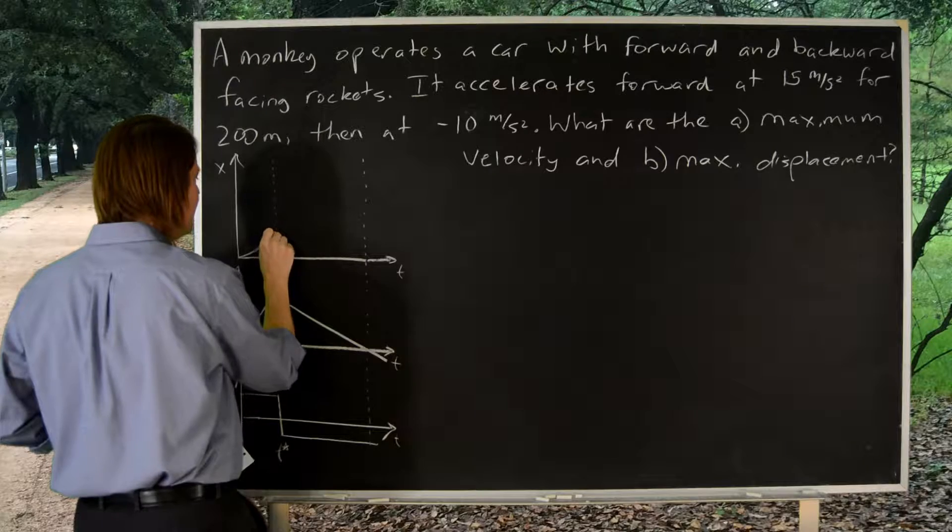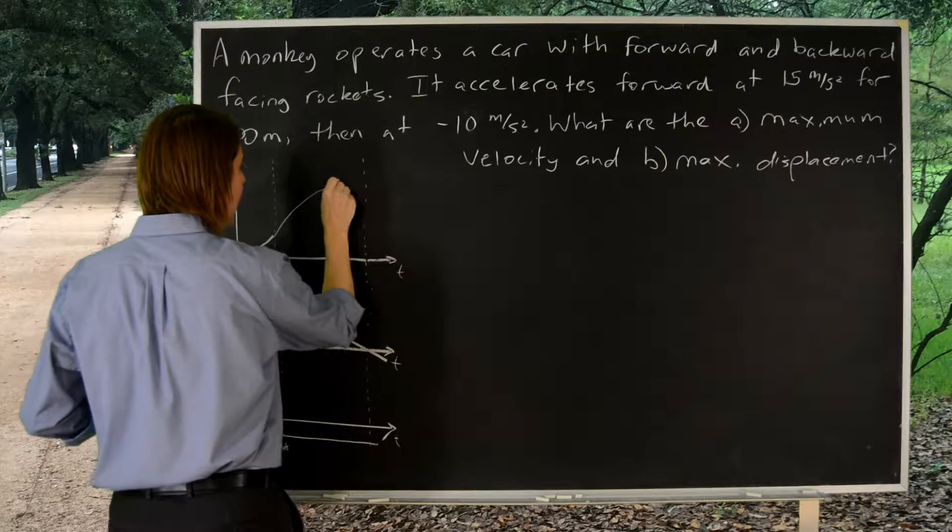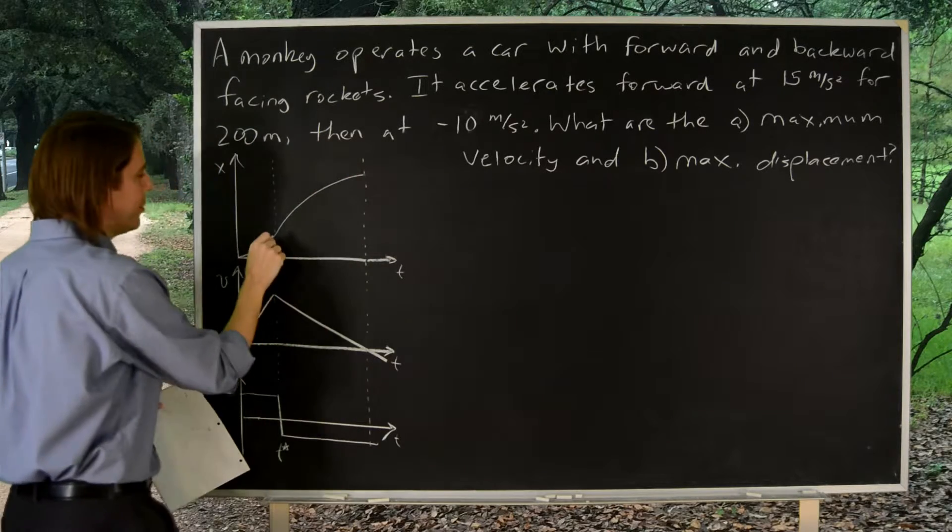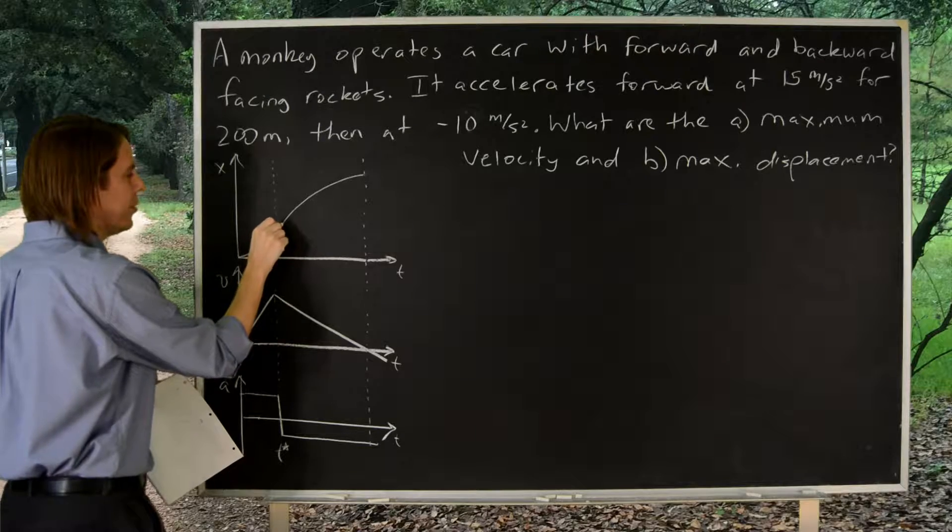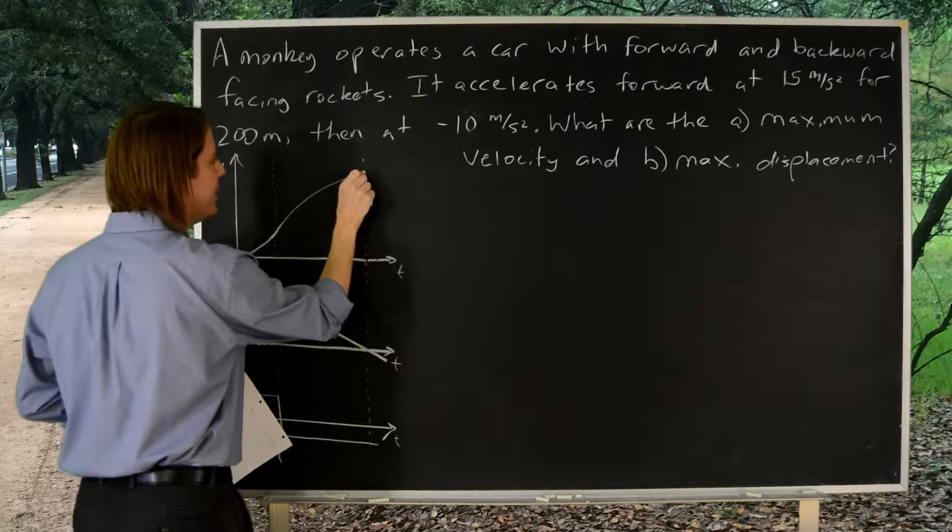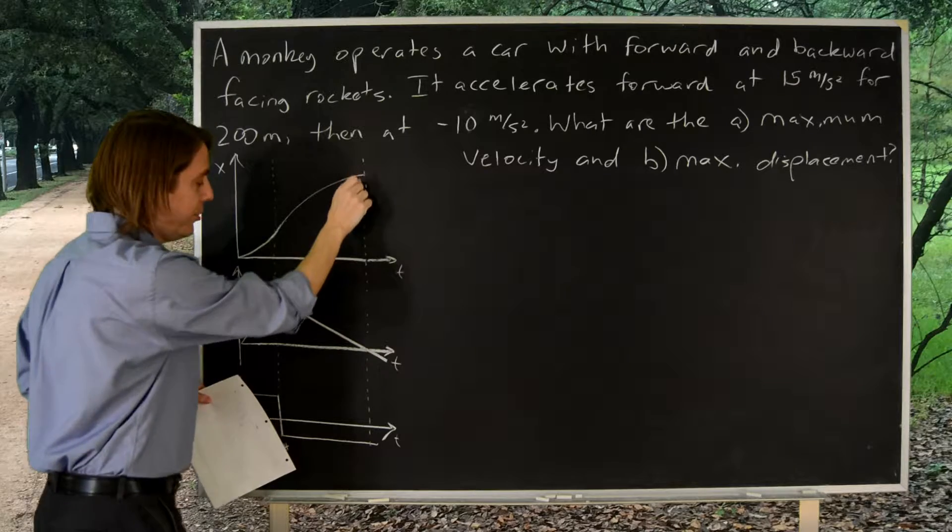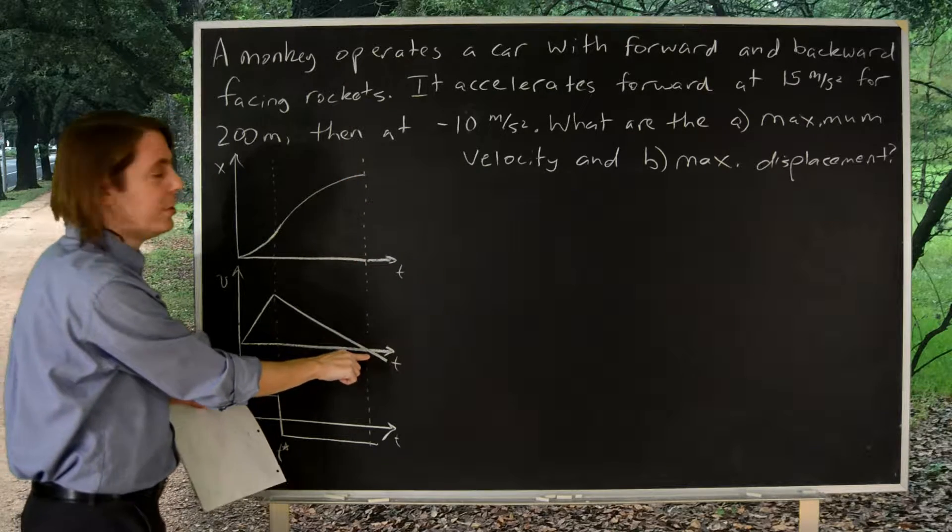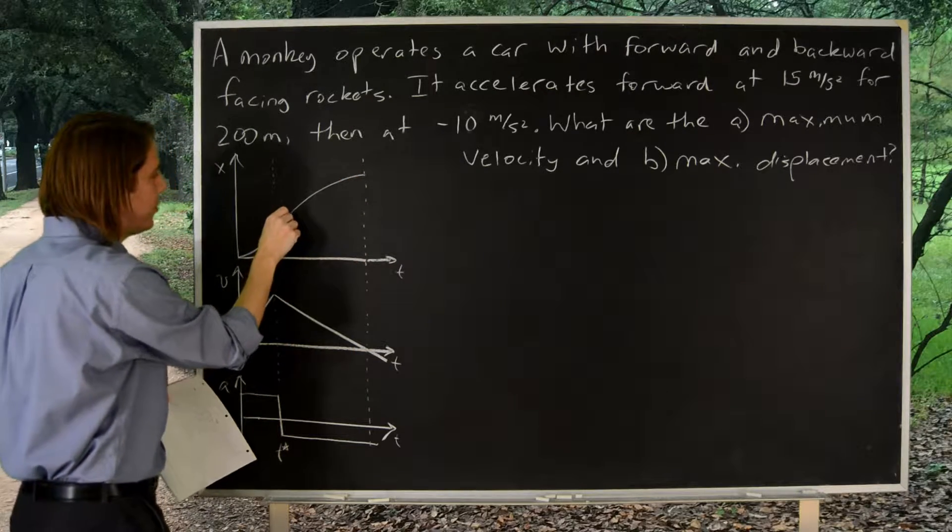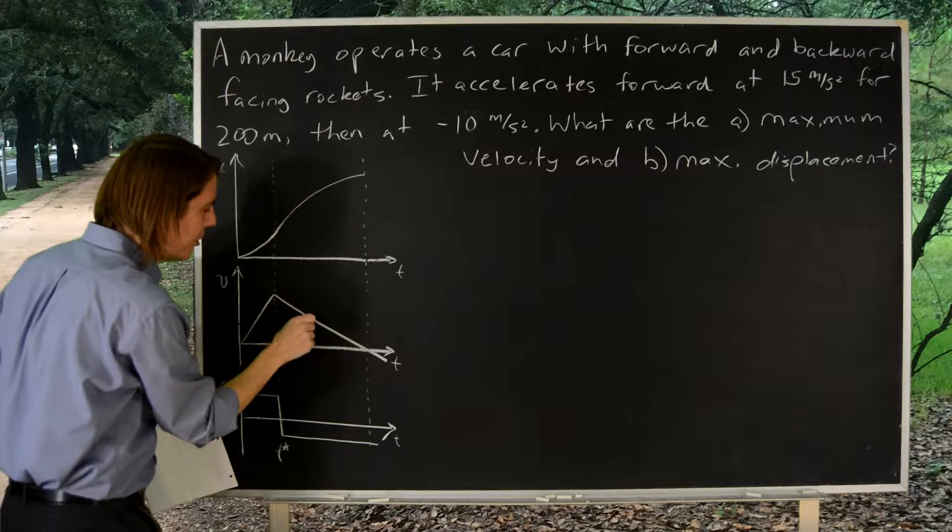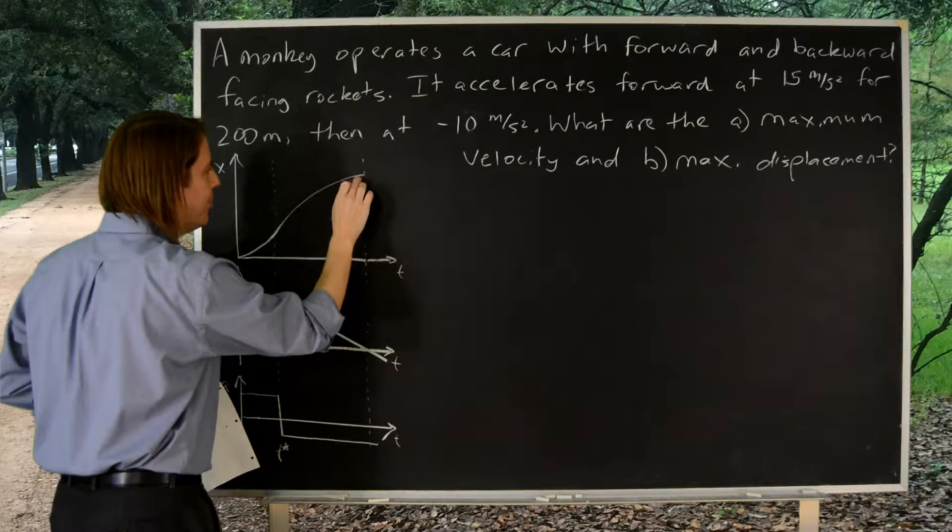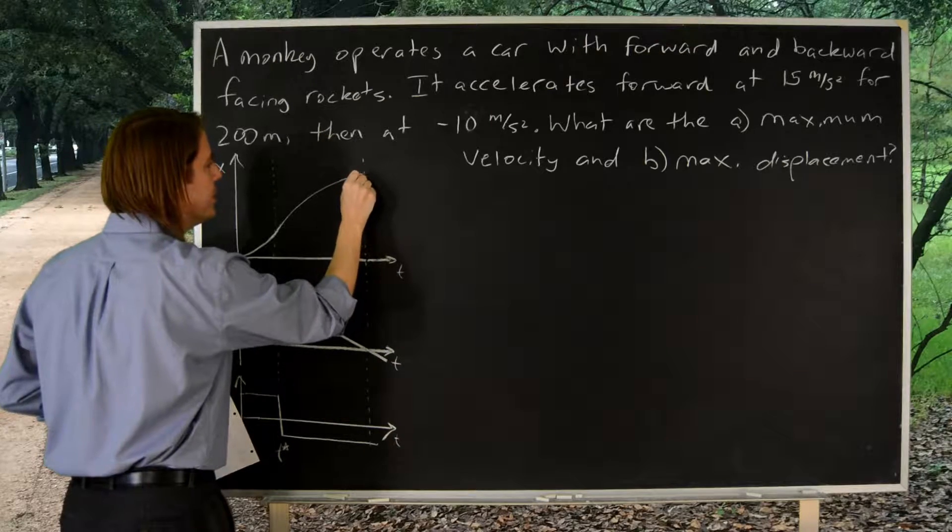And then the only thing I know in terms of how curved to make it is that it needs to be flat when I get here. Because what was that point? That's where the velocity is zero. So you can see the slope is getting smaller, smaller, smaller, smaller. Velocity is getting smaller, smaller, smaller. It hits zero there. My slope should hit zero there, which it pretty much does.